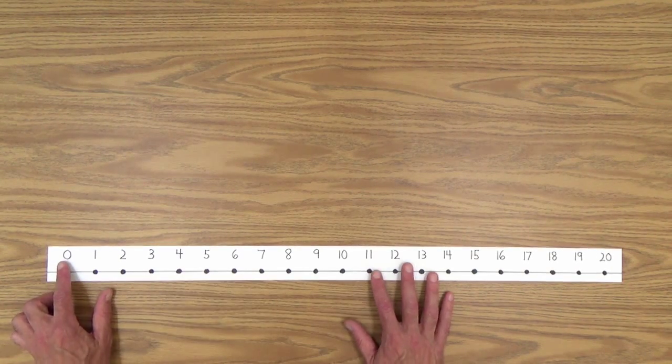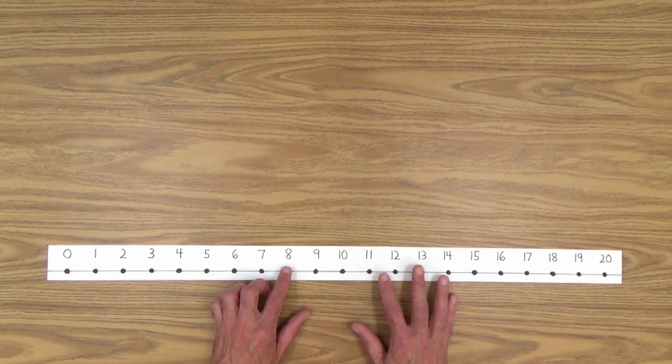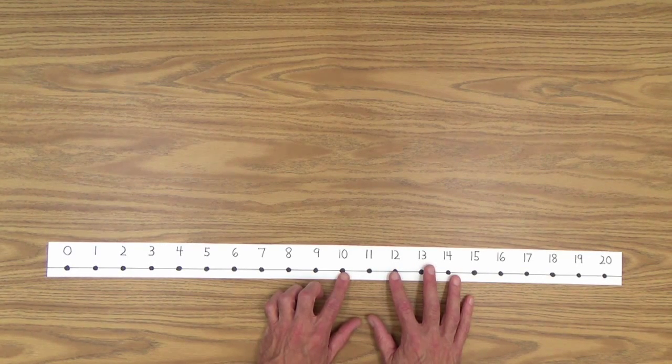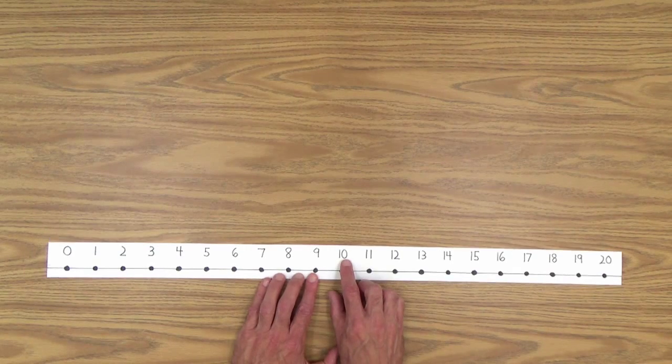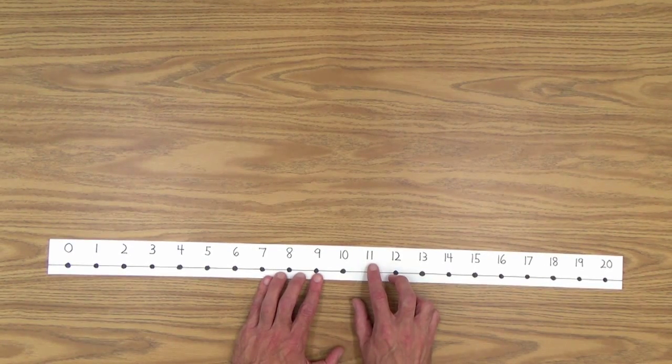So you can go one at a time pointing to the numbers. Let's say you get up to nine here and say, Oh, look, now we have numbers that have two digits. Look, there's a one and there's a zero. And look at this next one, two digits, a one and a one,